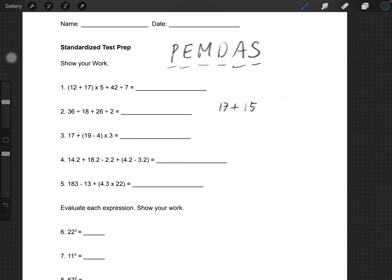Now you have addition and multiplication left, so you want to do multiplication first. It's 17 + 45, and that gives you 62. You do the same for the rest of these problems.